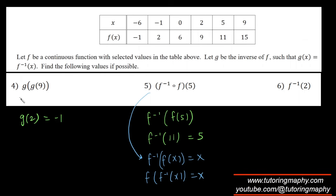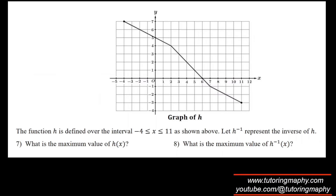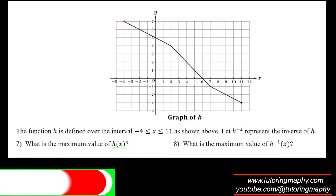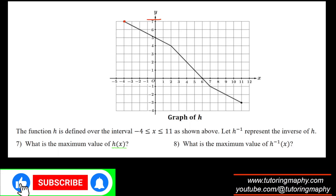f⁻¹(2): the y-coordinate of 2 corresponds to x = -1, so the answer is -1. Next, h is defined by a graph. The maximum value of h is simply the maximum y-value, which we can see is 7.